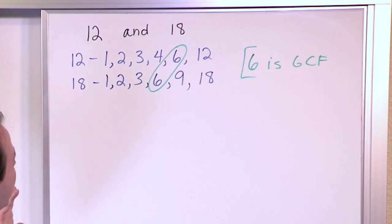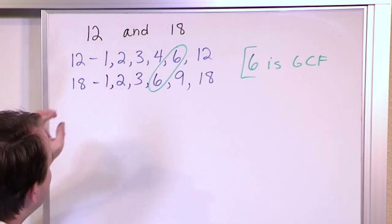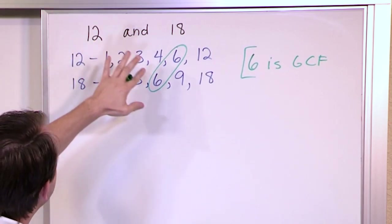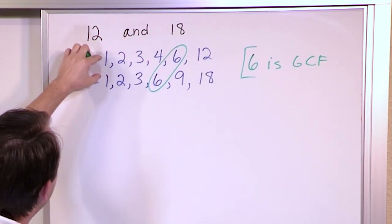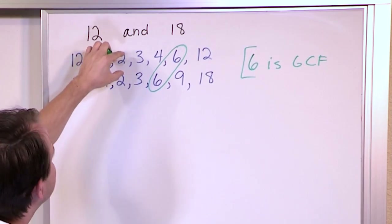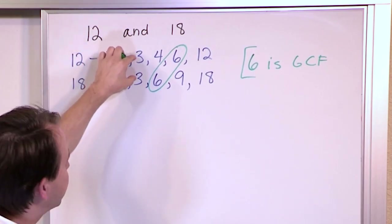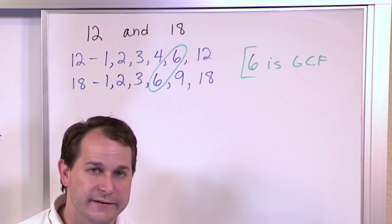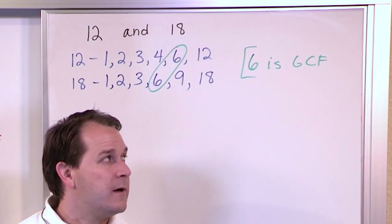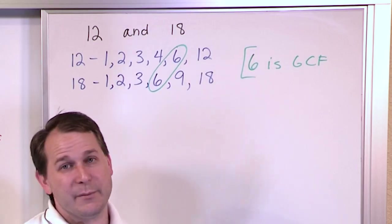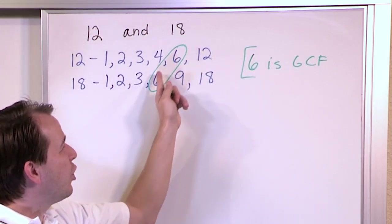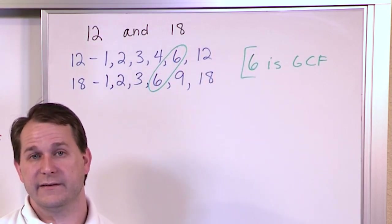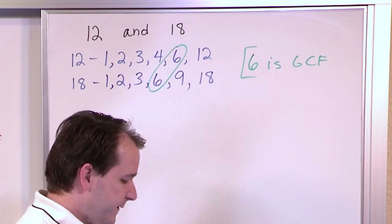So we know what we're pointing out here is that we have common factors — 1, 2, and 3 are all common factors — but they're not the greatest common factor. The greatest common factor is the largest number that's in both of these lists, which is 6.